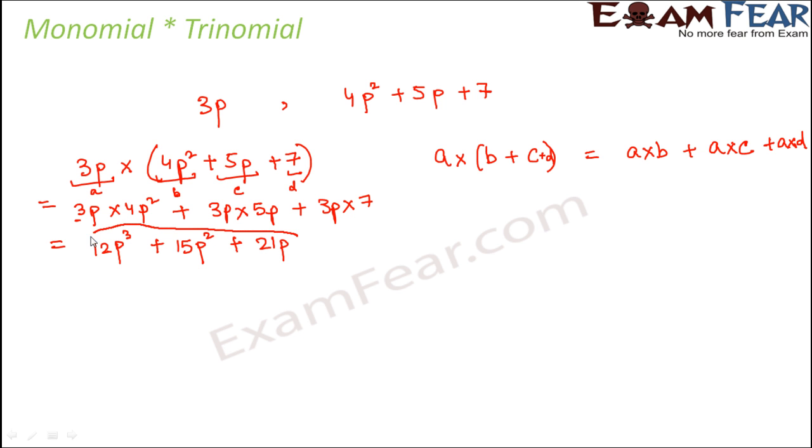So this is the first example. Let's take one more example. Let's suppose that you have a trinomial (a + b + c) and you have to multiply it with abc which is a monomial. Now you might feel that okay, the formula or the distributive law says a into (b + c + d) is equal to this, but in this case we do not have it in the form of a into (b + c + d).